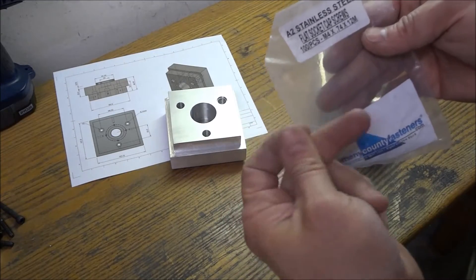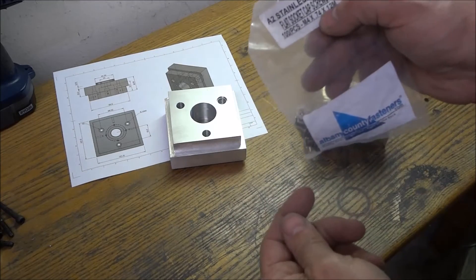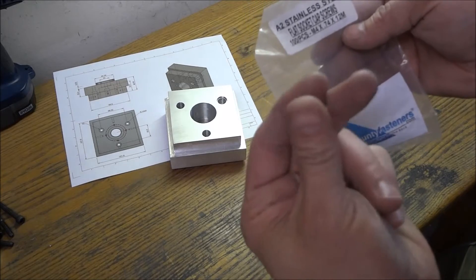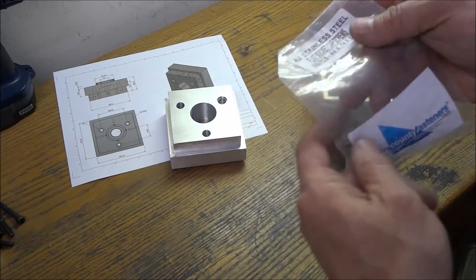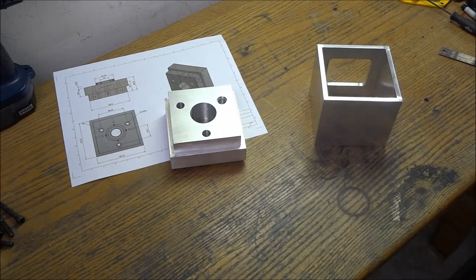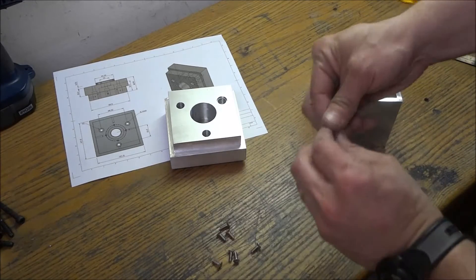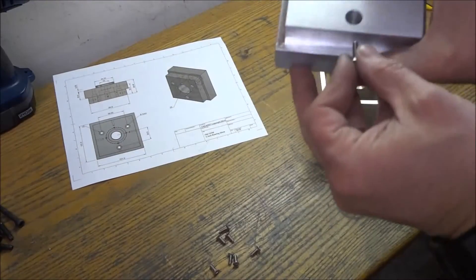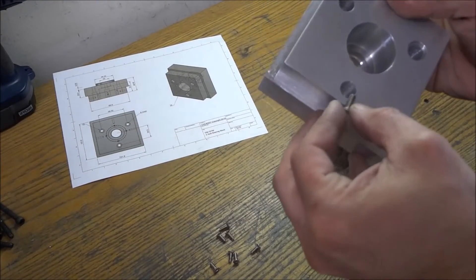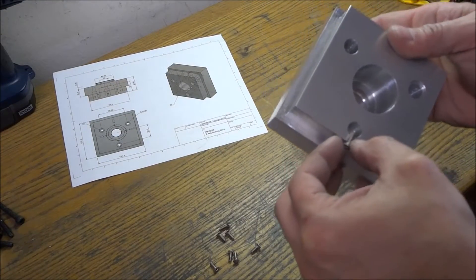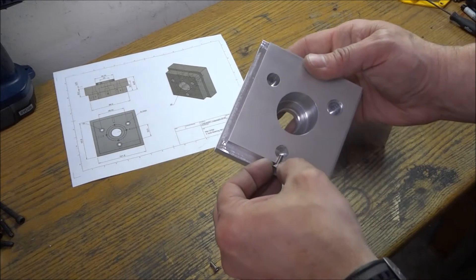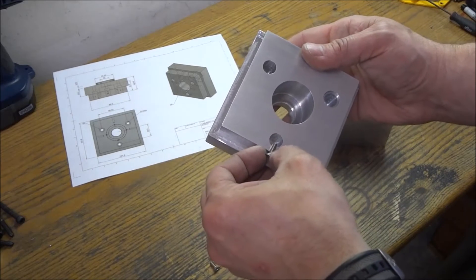We're just going to use socket cap screws, these are m4 by I think that's 0.75. Now if we put the hole in the center on the bearing block then this will probably protrude into this hole a little bit, which is okay.